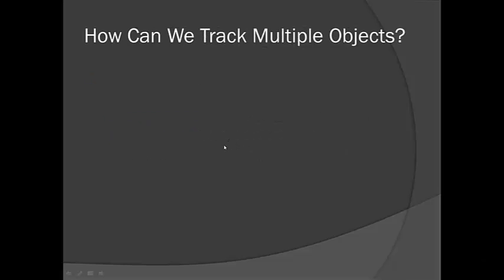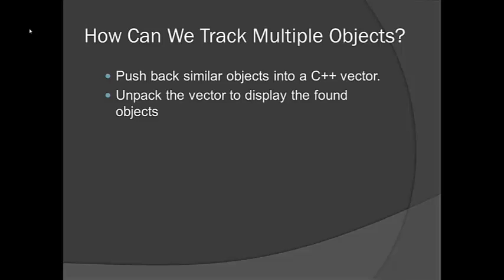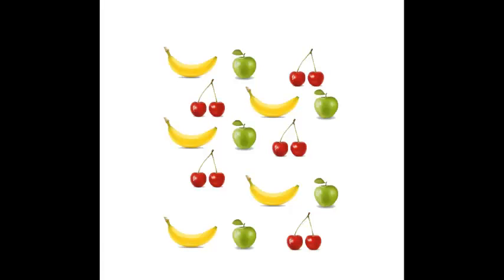Now in the comments of the last tutorial, a lot of people were asking how we can go about tracking multiple objects. I'm going to go over that in detail in this tutorial. In C++ what we can do is we can pack all the similar objects into a vector and then later in the code when we want to display them, we can just unpack the vector and display them at their respective coordinates. Let's take a look at this visually.